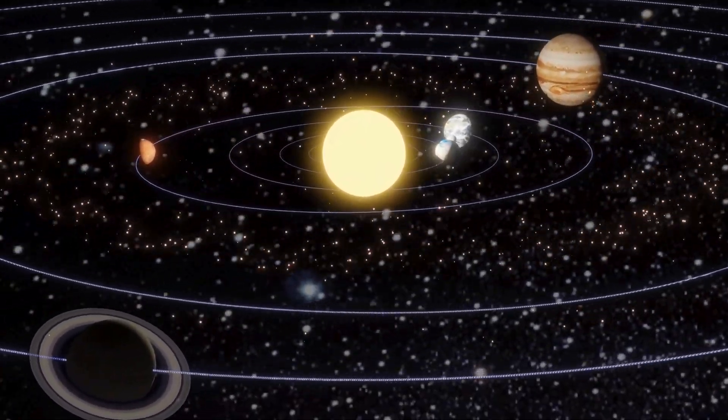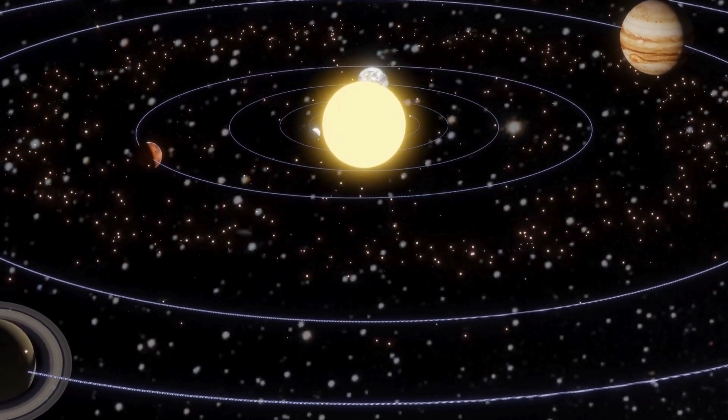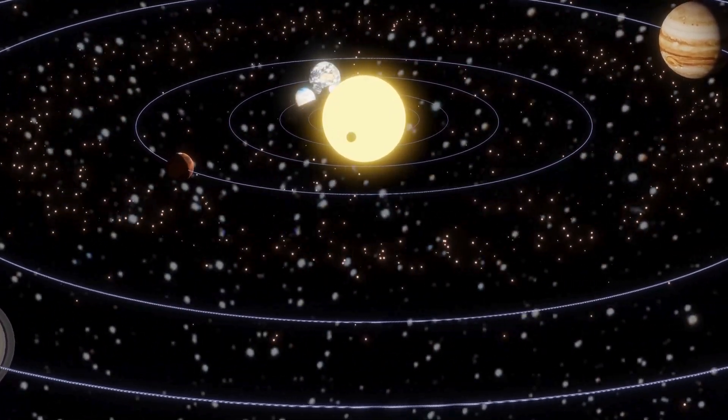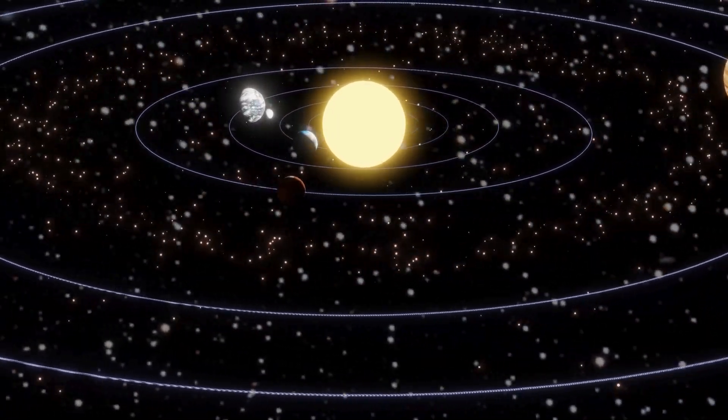Planets are constantly spinning on their own and traveling around the sun. For example, it takes Earth one year to go all the way around the sun. Even the sun is moving—it's spinning and moving through space.